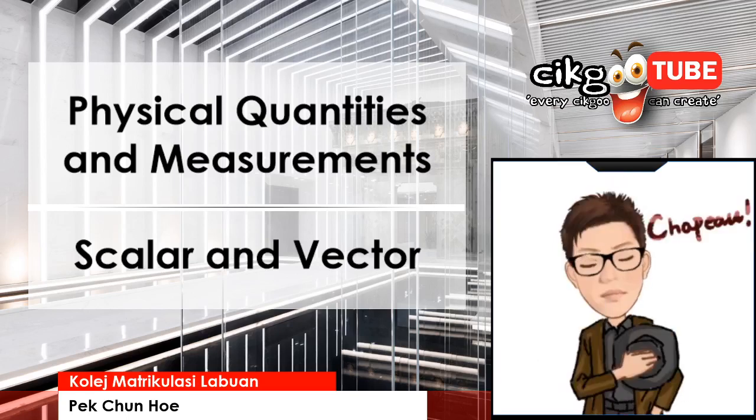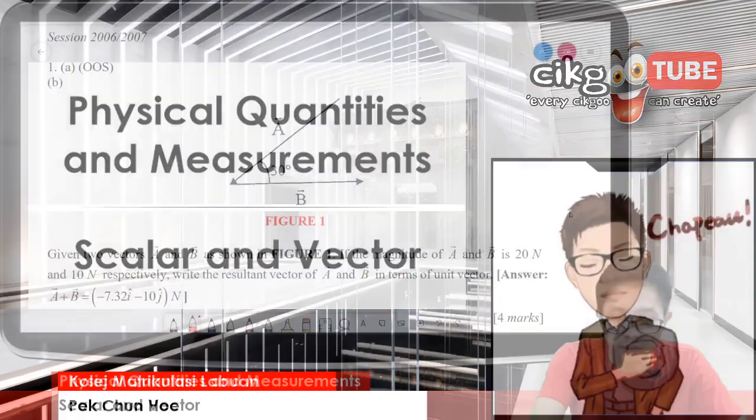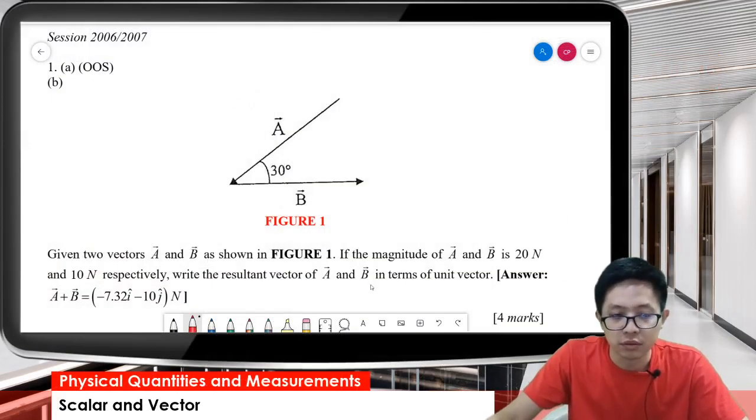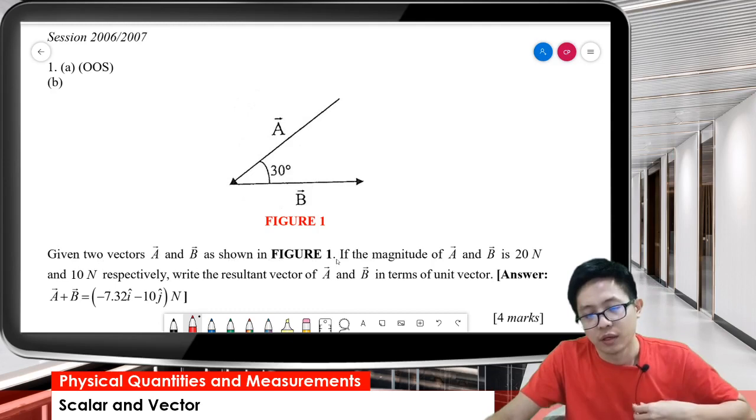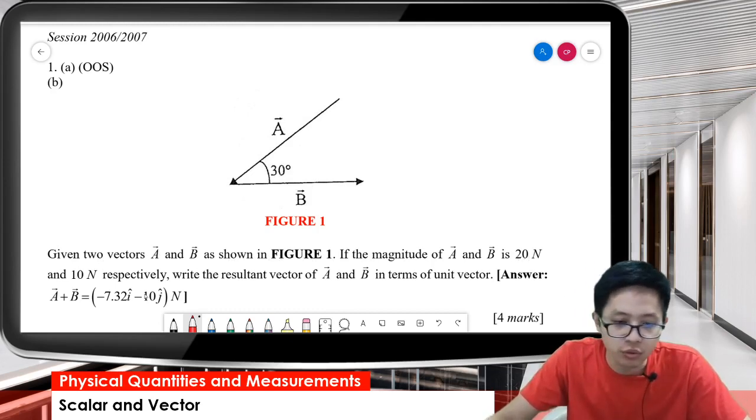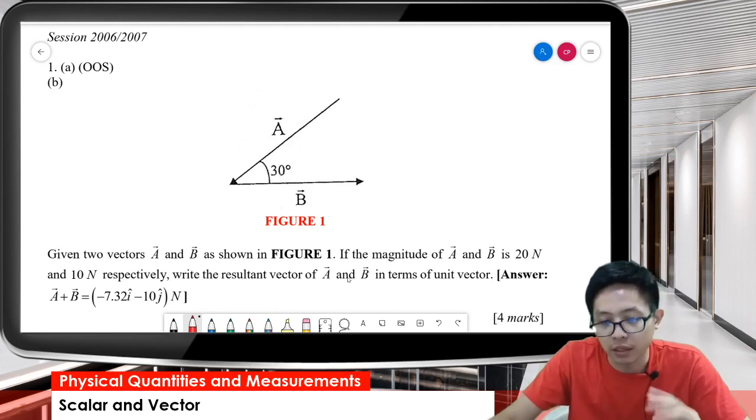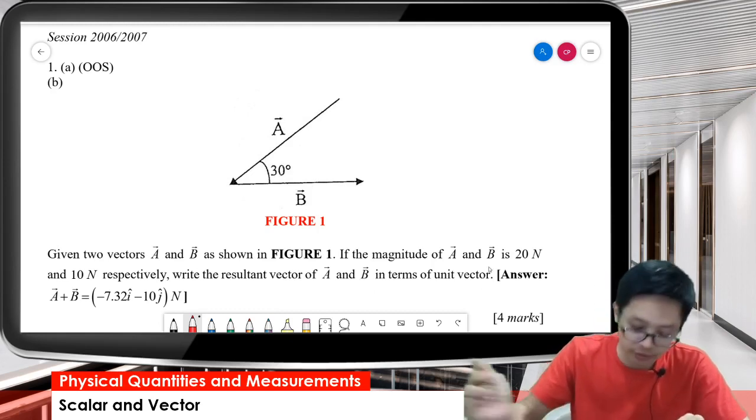Okay, let's continue our lesson on scalar and vector. Here's the question: given two vectors A and B as shown in Figure 1, if the magnitude of A and B is 20 Newton and 10 Newton respectively, write the resultant vector of A and B in terms of unit vector.